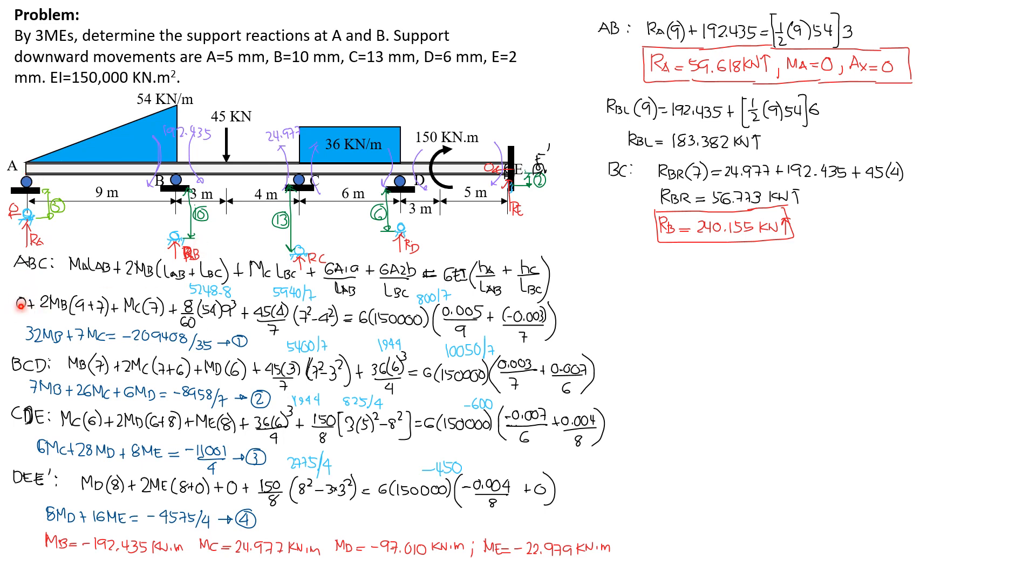Since moment at A is 0, we write 0, plus 2 moment at B, quantity length of AB is 9, length of BC is 7, plus moment at C times length of BC, 7, plus 6 area 1A over L of AB. The value of 6 area 1A over LAB with respect to the left is 8 over 60, WL cube. That's the formula.